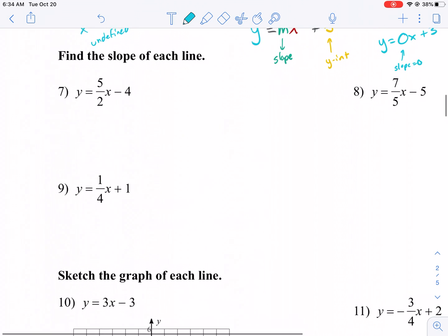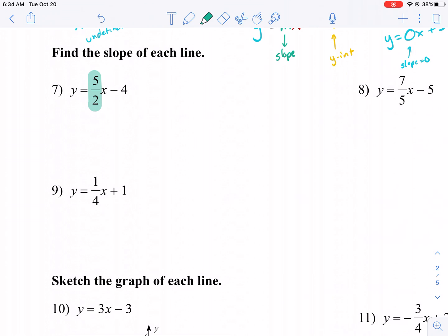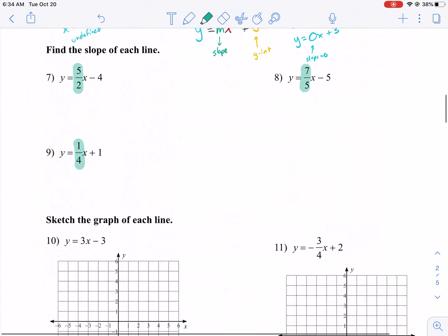And then x equals a number, for example. This is kind of a sidetrack. This has an undefined slope. This is a special case. Just like your mom says you are. And you are, you are special. Everyone's special. Find the slope of each line. So this one's actually a very easy process. We're just gonna look at the number in front of x. In this case it's five over two. This one's seven over five. This one's one over four. It's that easy. You look for the number that's being multiplied by x. As long as y is alone.